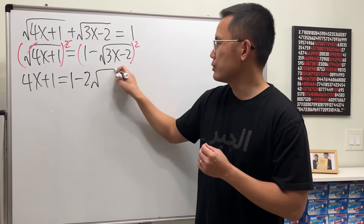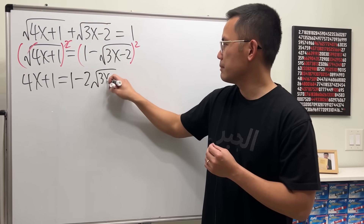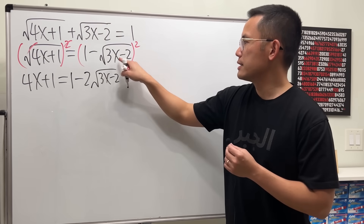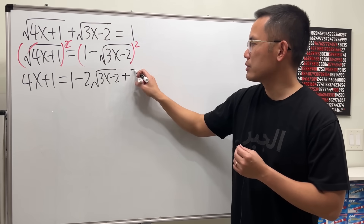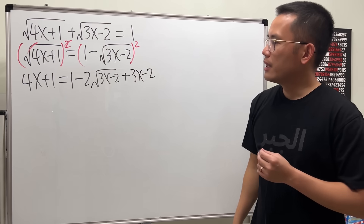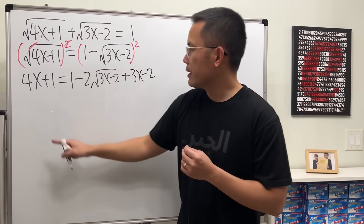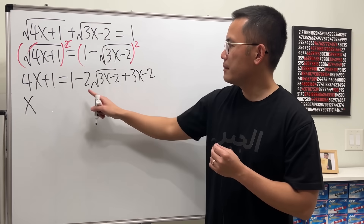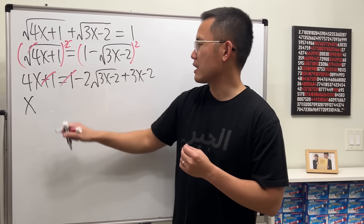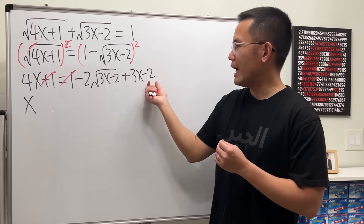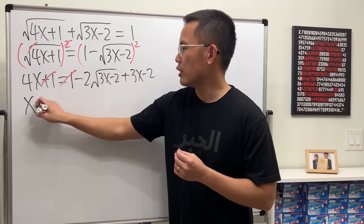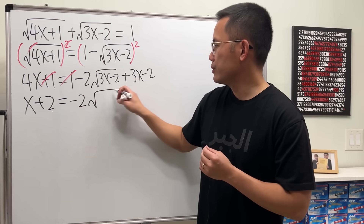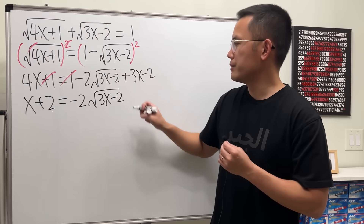That gives us minus 2 times square root of 3x minus 2, and lastly we add this square — the square root cancels — so plus 3x minus 2. Now subtract 3x from both sides, we just have x, then subtract 1 from both sides, and add 2 to both sides, so we get x plus 2 equals negative 2 times square root of 3x minus 2.